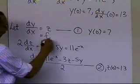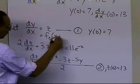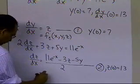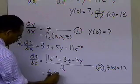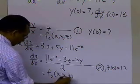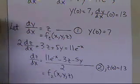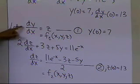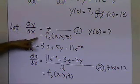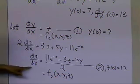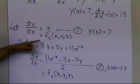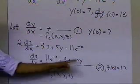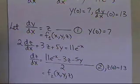The first equation defines f1(x, y, z), and the second equation defines f2(x, y, z), which we need for setting up Heun's method. So f1 is simply z, and f2 is the function (11·e^(−x) − 3z − 5y) / 2, which we have calculated.